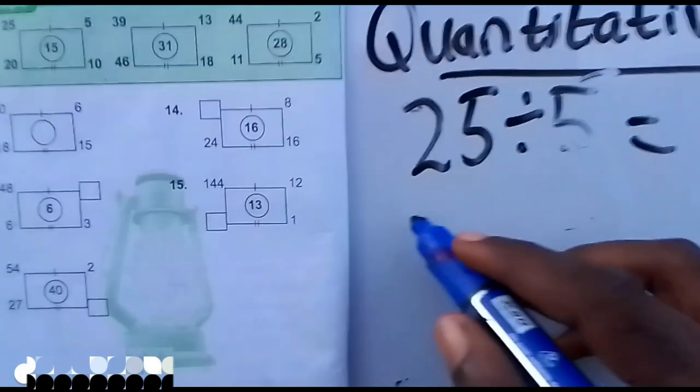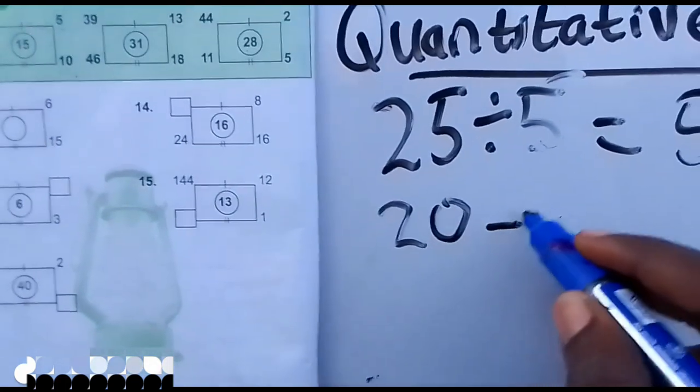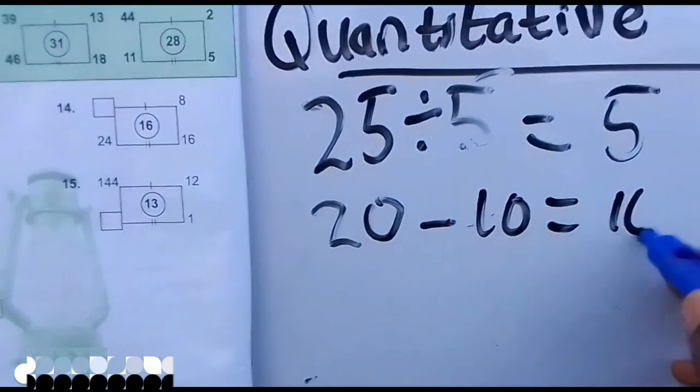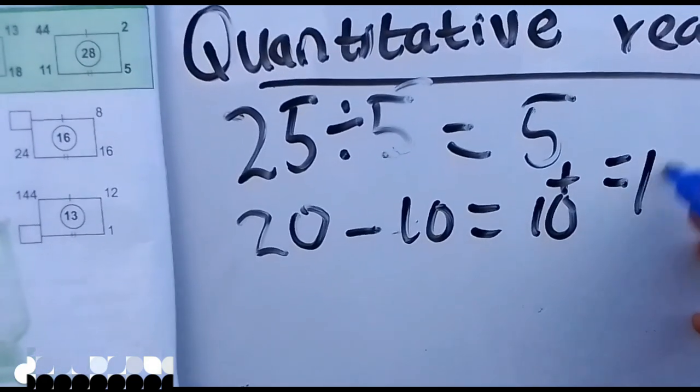And two strokes here means minus. 20 minus 10 gives us 10. So when you add both of them you have 15.